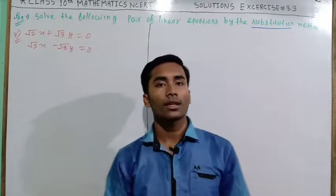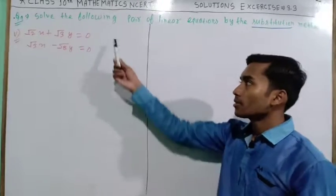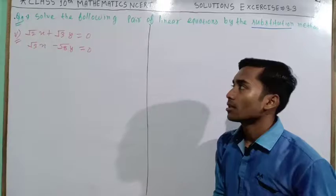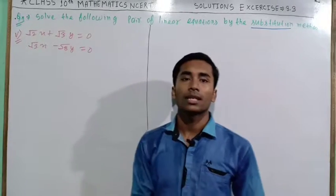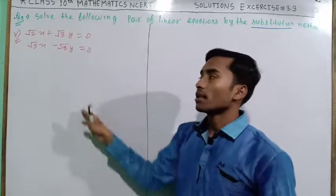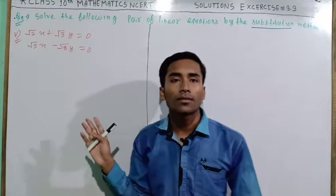Number 5, the next question is: you are given two equations. One is √2x + √3y = 0 and second one is √3x - √8y = 0, and you have to solve for the values of x and y.